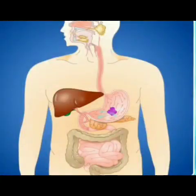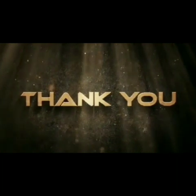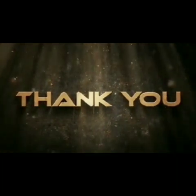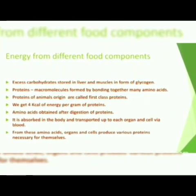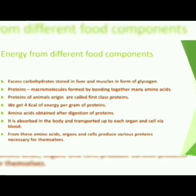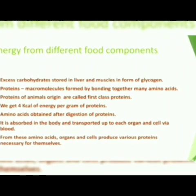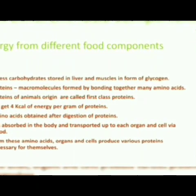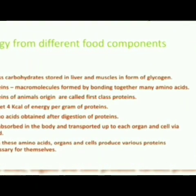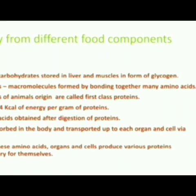Quick recap: Excess carbohydrates are stored in the liver and muscles as glycogen. Proteins are macromolecules formed by bonding many amino acids; proteins of animal origin are first class proteins. We get 4 kcal per gram of protein. Amino acids obtained after digestion are absorbed and transported to organs and cells via blood.